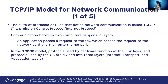The TCP/IP model for network communications: the suite of protocols or rules that define network communications is called the TCP/IP stack — Transmission Control Protocol slash Internet Protocol. Communication between two computers happens in layers. An application passes a request to the OS, which passes the request to the network card and then onto the network. In the TCP/IP model, protocols used by hardware function at the link layer, and protocols used by the OS are divided into three layers: the internet, transport, and application layers. You may have also heard of the OSI model — that's a seven-layer model that corresponds to the TCP/IP model.